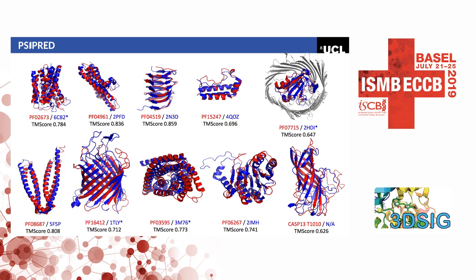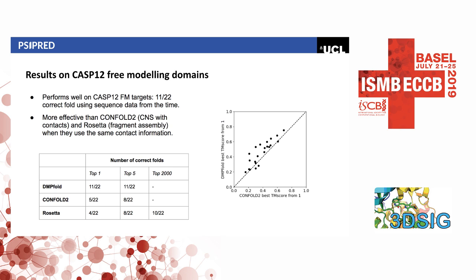Here's a variety of example models — in red is the model, in blue is the crystal structure. We do well on alpha and beta topologies of various sizes. The asterisks mark membrane proteins, and we do well on those too. In the bottom right you can see CASP13 target T1010, where we produced the best model. For validation, we ran this on CASP12 free modeling targets using sequence data from the time, and find that 11 of 22 have the correct fold — for reference the best servers in CASP12 achieved 8. We also compare the model generation procedure: using the same contact information, DMPfold produces superior models compared to Confold2 or Rosetta using the PEGASUS fold protocol.